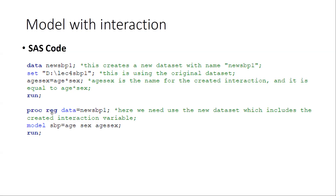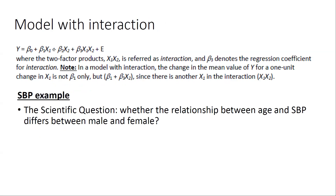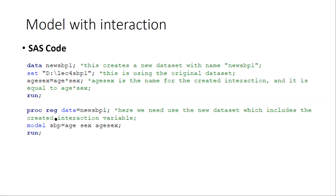Then we use PROC REG to run the linear regression model with three terms. We need to have the main exposure, which is age, then we need the effect modifier, which is gender, and then the age-gender interaction term. In PROC REG, we specify the data as the new dataset we just created, which includes the interaction term between age and sex. The model statement defines the model: SPB is the Y variable on the left-hand side, and the predictor variables on the right-hand side include age, gender, and the interaction between age and gender.